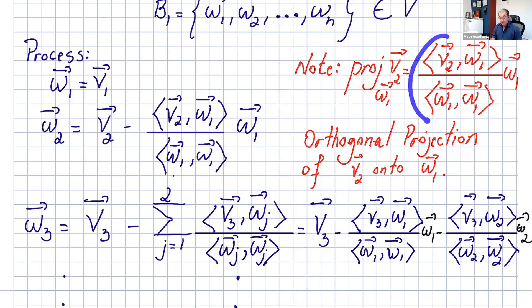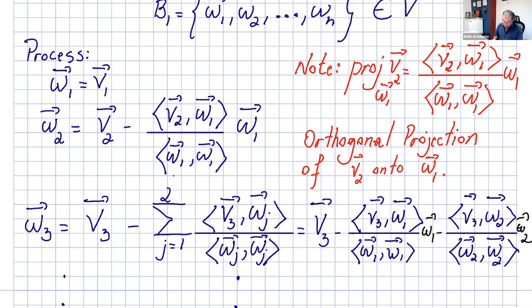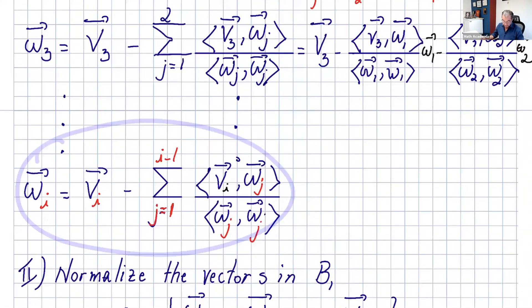This quantity is just the orthogonal projection of V2 onto W1, and I have the proof for that in the last video. I did that in R2 so it's very clear. As I told you, that works for all vector spaces. Then if you want to find W3, it is V3 minus — using summation notation — you find the orthogonal projection of V3 onto W1 minus the orthogonal projection of V3 onto W2. That's the general form using summation notation.